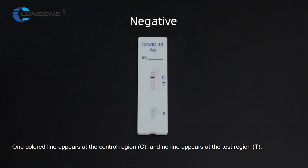Negative: One color line appears at the control region and no line appears at the test region.